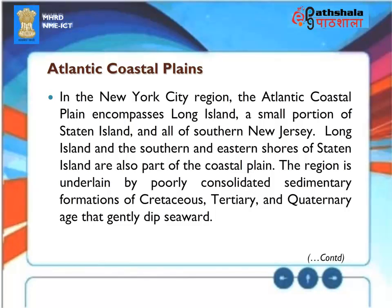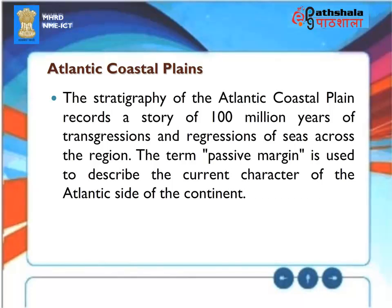Atlantic Coastal Plains: In the New York City region, the Atlantic Coastal Plain encompasses Long Island, a small portion of Staten Island, and all of southern New Jersey. The region is underlain by poorly consolidated sedimentary formations of Cretaceous, Tertiary, and Quaternary age that gently dip seaward. The stratigraphy of the Atlantic coastal plain records a story of 100 million years of transgressions and regressions of seas across the region. The term 'passive margin' describes the current character of the Atlantic side of the continent.